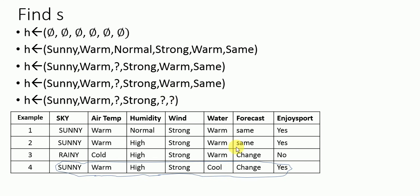Comparing the values: warm and cool are different, so these two are made generic — replaced with question marks. The resulting hypothesis becomes: sunny, warm, any value, strong, any value, any value. The first value remains specific, the middle values become more generic, and the last value is completely generic.